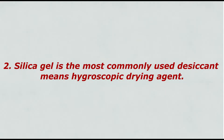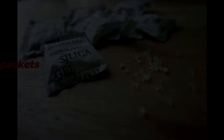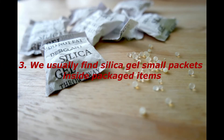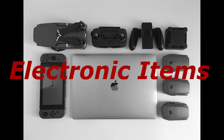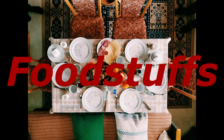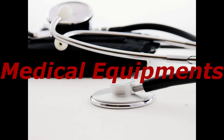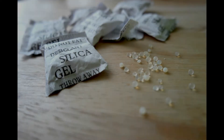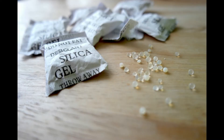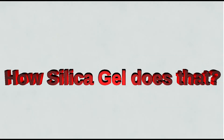Silica gel is the most commonly used desiccant, meaning hygroscopic drying agent. We usually find silica gel small packets inside packaged items such as electronic items, food stuffs, medical equipments, etc. These packets are used to keep that particular item dry. How does silica gel do that? We will see in this video.